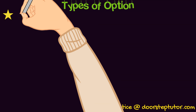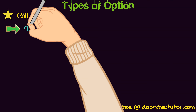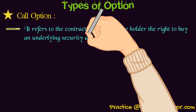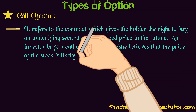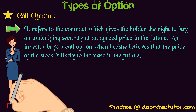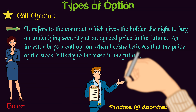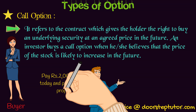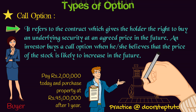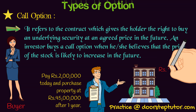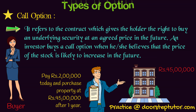A call option is one in which the buyer of the option purchases the right to buy the underlying asset. For example, a person pays 2 lakh rupees as a premium amount and purchases the right to buy a property at 45 lakh rupees after a year. If the buyer of the option does not want to purchase the property after 1 year at 45 lakh rupees, then the writer of the option cannot force him, because the buyer has the right but not the obligation to purchase the property in future.